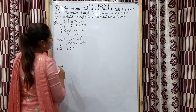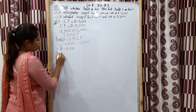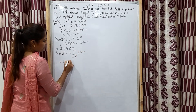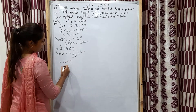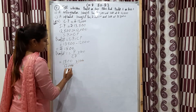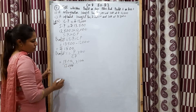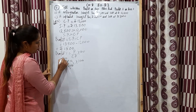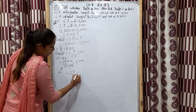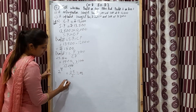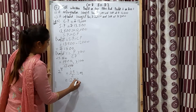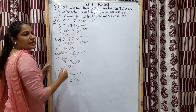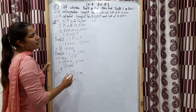Then we have to find profit percentage using the formula: profit upon CP multiplied by 100. Profit is 1,500 and CP is 12,000. Cancel zeros: on the table of 3, calculating gives 25 upon 2 percent, which in decimal is 12.5 percent.